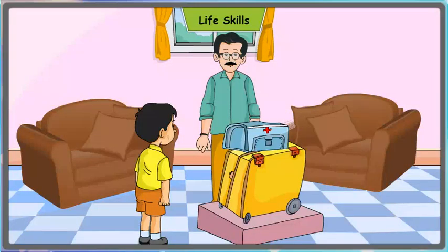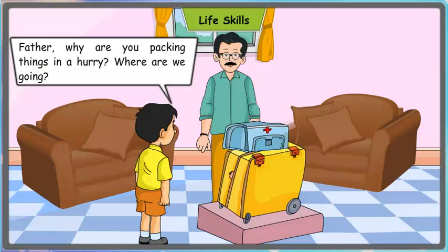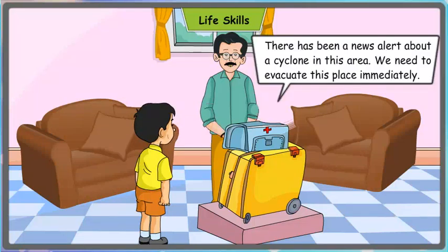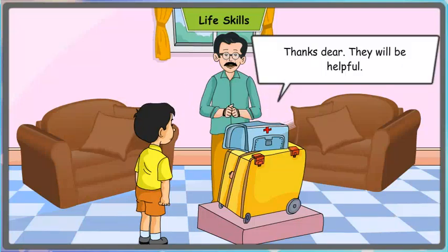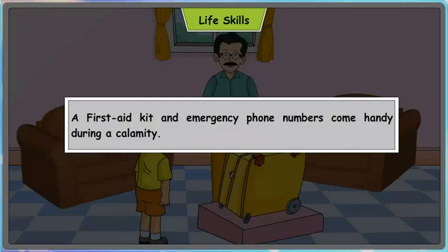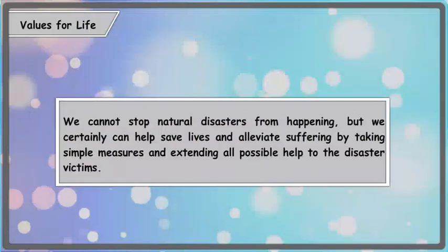Life Skills dialogue — Child: Father, why are you packing things in a hurry? Where are we going? Father: There has been a news alert about a cyclone in this area. We need to evacuate this place immediately. Also keep these emergency phone numbers and first aid kit in the bag — we might require them. Child: Thanks, dear, they will be helpful. A first aid kit and emergency phone numbers come in handy during a calamity. Values for life: We cannot stop natural disasters from happening, but we certainly can help save lives and alleviate suffering by taking simple measures and extending all possible help to the disaster victims.